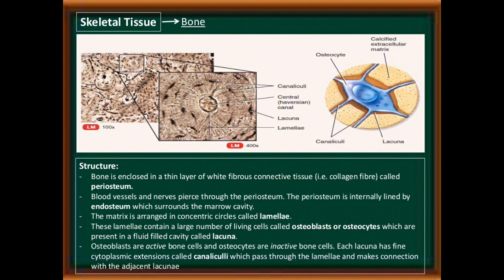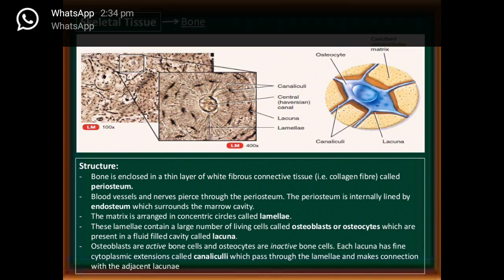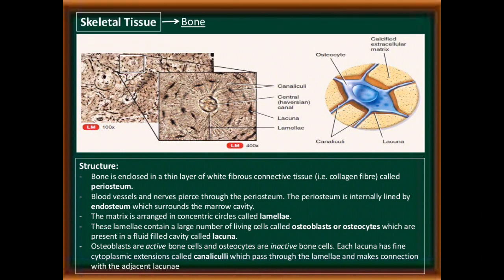Structure of bone: Bone is enclosed in a thin layer of white fibrous connective tissue made of collagen fibers called the periosteum. Blood vessels and nerves pierce through the periosteum. The periosteum is internally lined by the endosteum, which surrounds the marrow cavity. The matrix is arranged in concentric circles called lamellae.